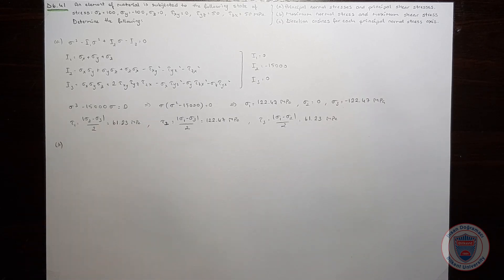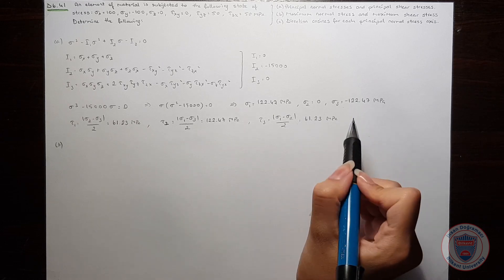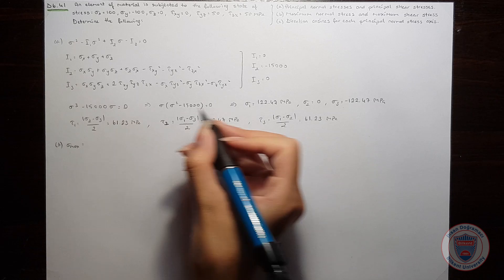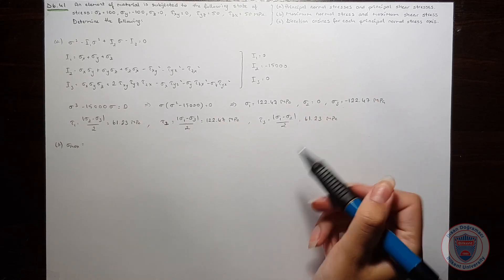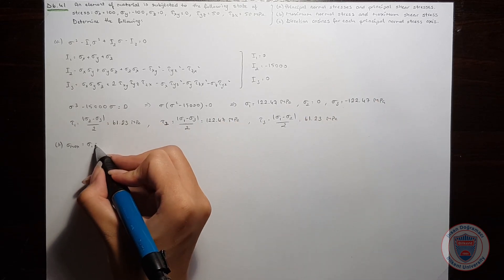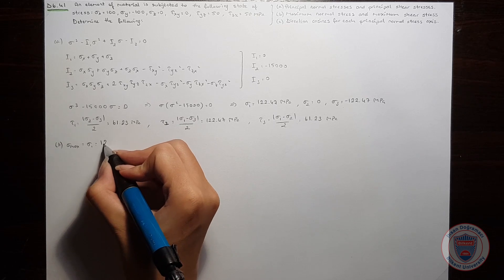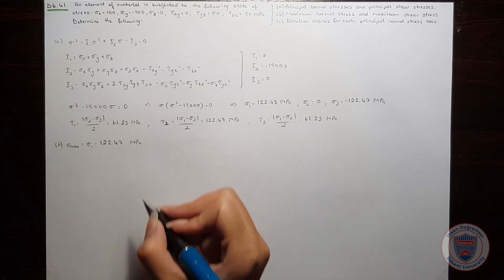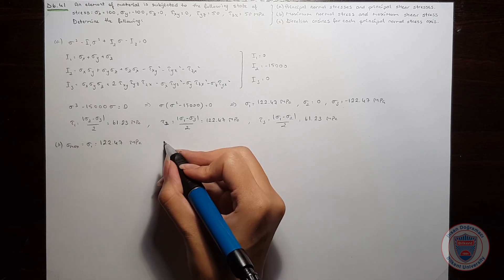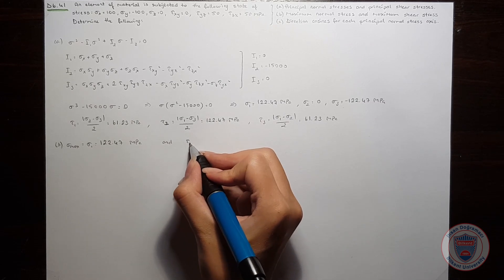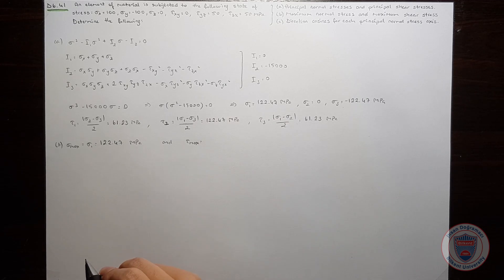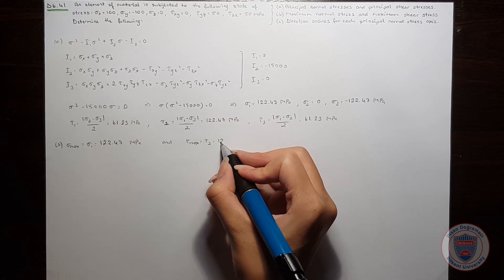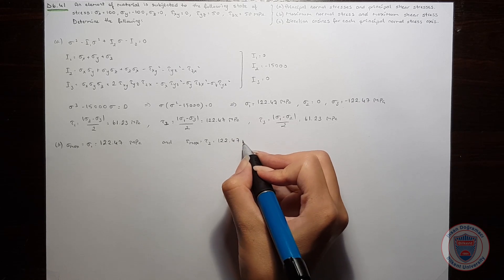For part B, the maximum normal stress is equal to sigma_1, because it is the largest among the principal normal stresses, and it equals 122.47 MPa. The maximum shear stress will be equal to tau_2, which is 61.23 MPa.